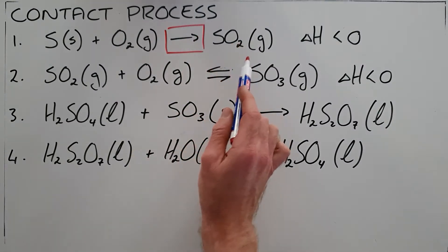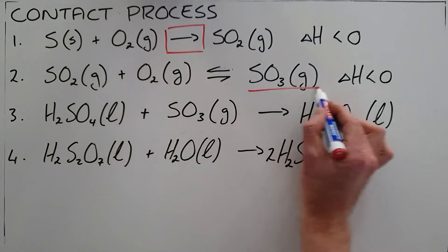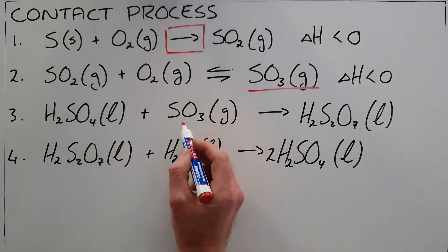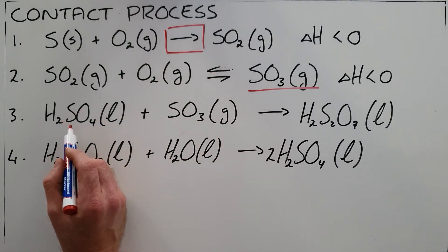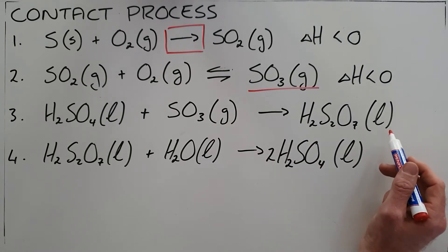From there we take the sulfur dioxide and react it with oxygen again in a reversible reaction to form sulfur trioxide, that is then reacted with some sulfuric acid to form H2S2O7, also known as oleum.